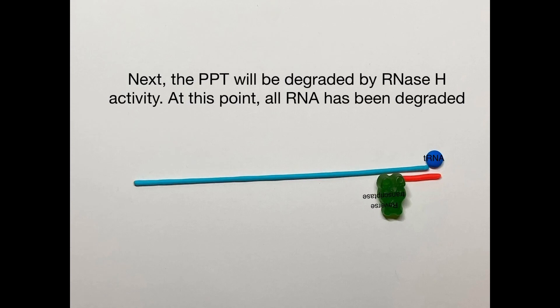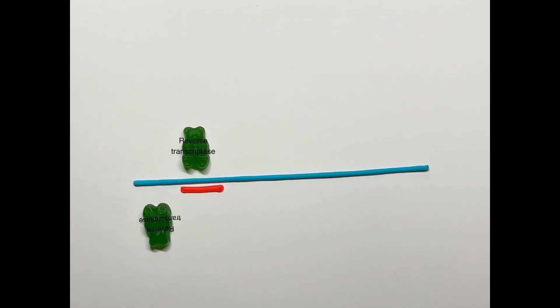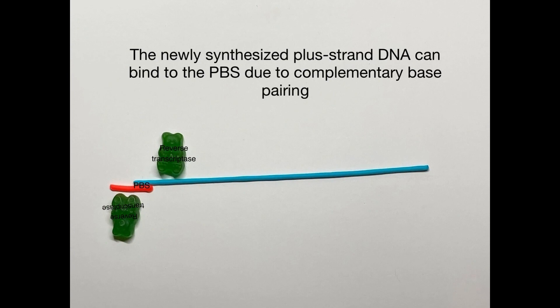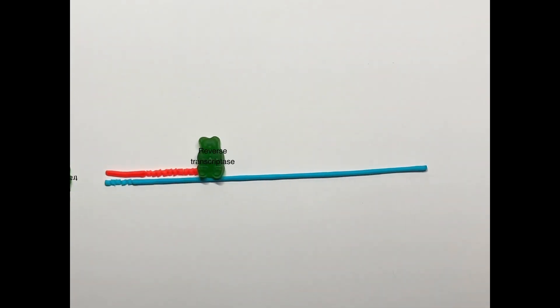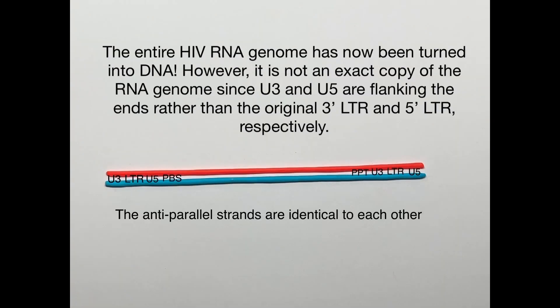Next, the PPT is degraded by RNase H activity, and at this point all RNA has been degraded. Since both cDNA strands have a PBS site, they can bind to each other, and reverse transcriptase finishes copying the whole genome into DNA. The completed DNA genome differs slightly from the original RNA genome, as U3 and U5 now flank the ends rather than the original 3' LTR and 5' LTR. However, the two cDNA strands are identical to each other.